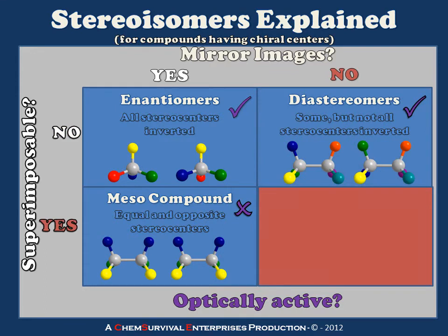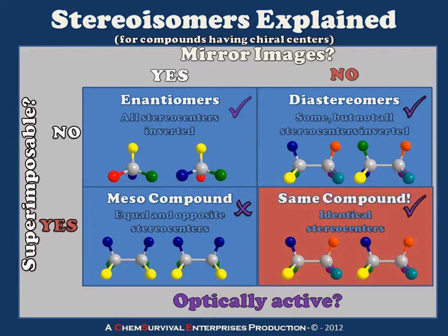Finally, in the case where we have a superimposable compound with chiral centers that is not its own mirror image, we're actually talking about the same compound, and it's going to have identical stereocenters throughout. Now let's talk about a specific example of a compound which has each of these stereoisomers.